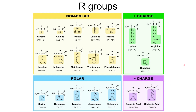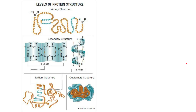You need to refer to the structure of a protein in terms of its primary, secondary, tertiary, and quaternary structure. If we are simply looking at the sequence of amino acids found within the protein — each represented here as a different speck — then we are studying the primary structure.